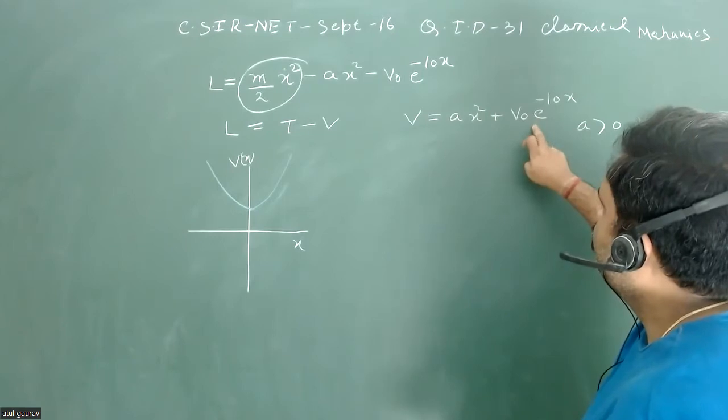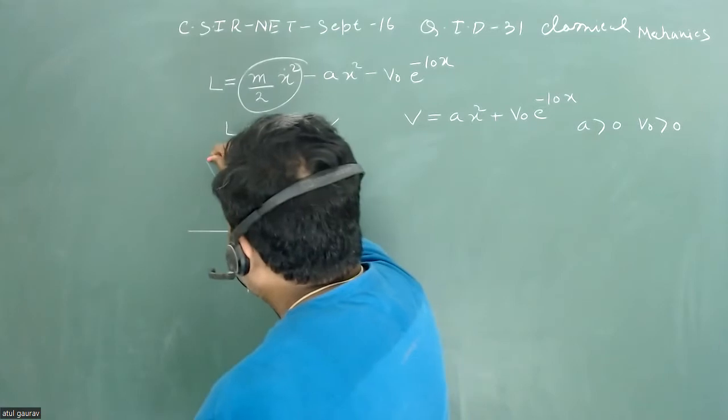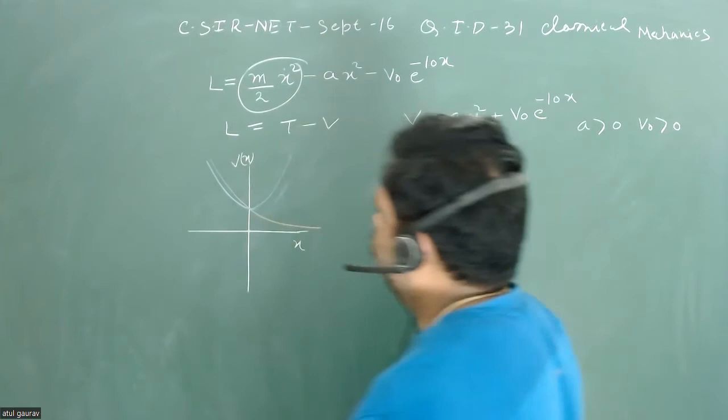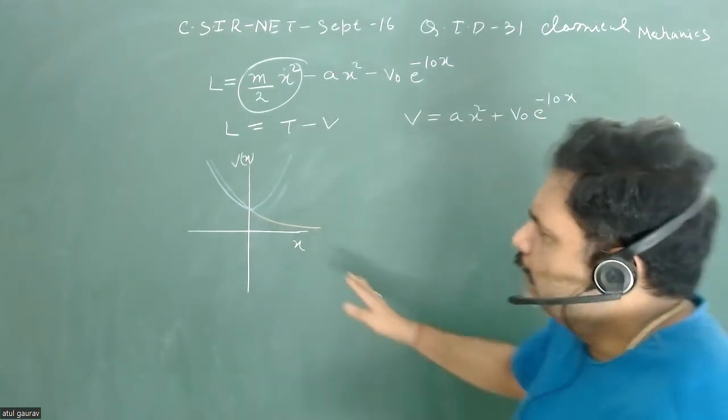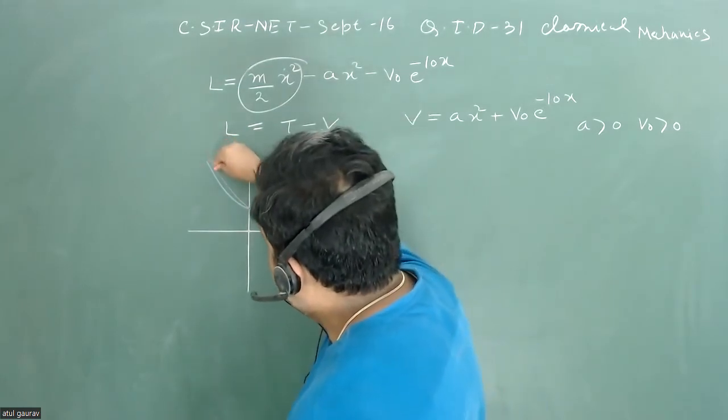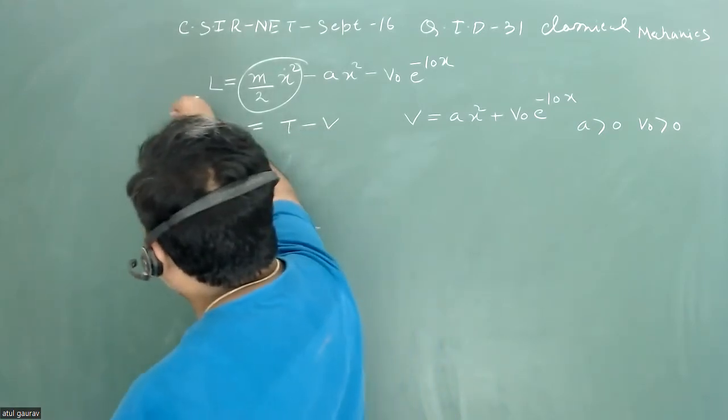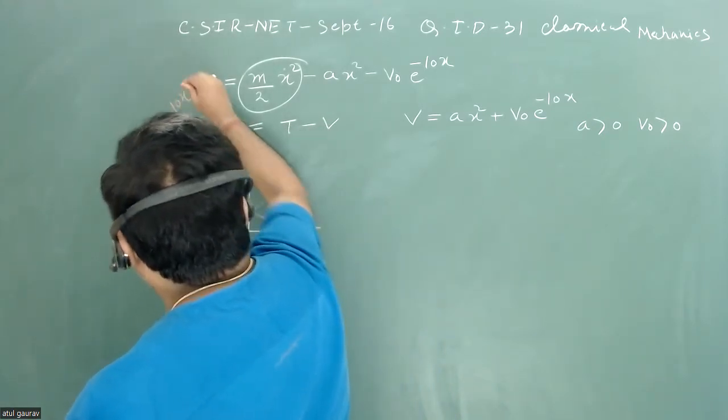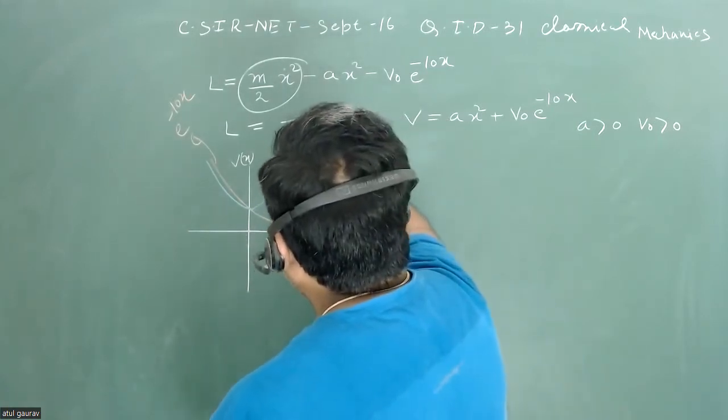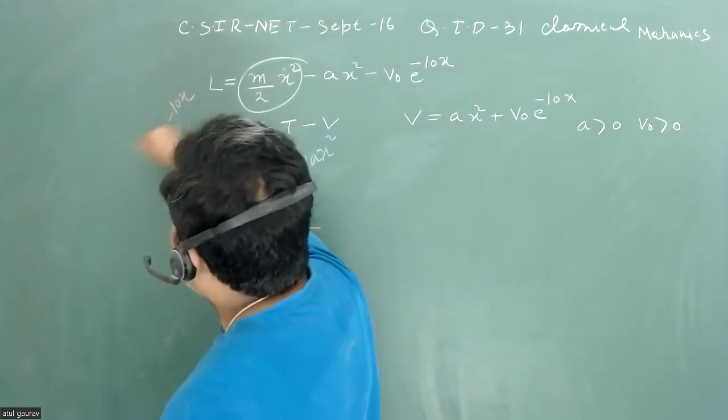And let's try to plot this one. So when we are going to plot this one, this curve will be something like this. If we are just going to see this particular potential, this is basically e to the power minus 10x. And this particular potential is basically some x square kind of thing, A x square, and you can have something V naught.